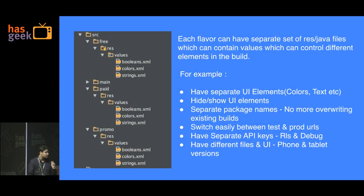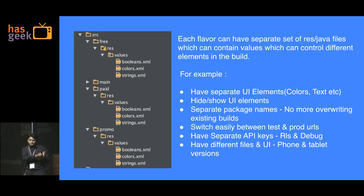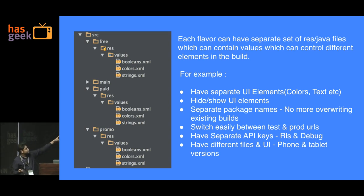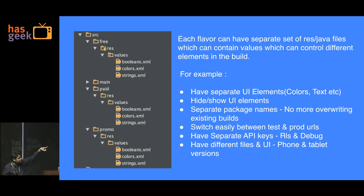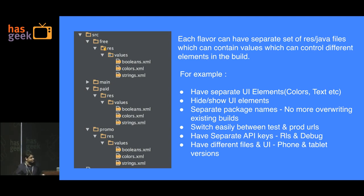It goes a step further — you're not limited to just one set of variables. Each flavor can have a separate set of resources and Java files as well, so you could have different UI elements, hide or show elements. If one build version needs to show a particular color or UI element and the other doesn't, you create a free, paid, or promo package each with a resource folder inside. To override them, you need to provide the exact same key names — for example, a color key called 'red' in colors.xml must use the exact same name.